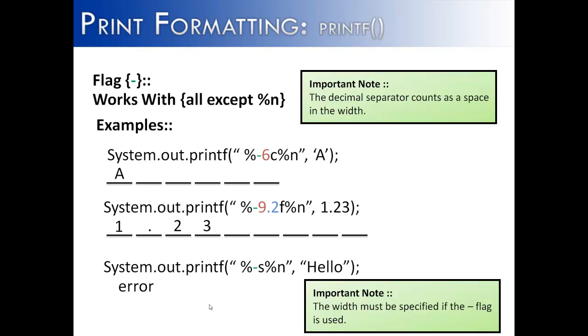The hyphen flag used within the printf method left justifies every output, and it must be combined with a width. The default width is right justified, but the hyphen flag will indicate left justification.